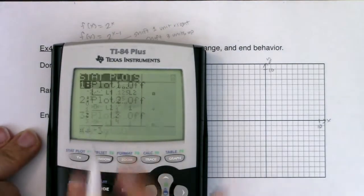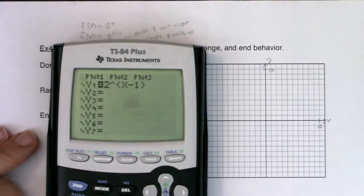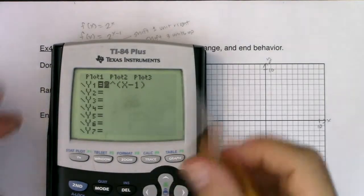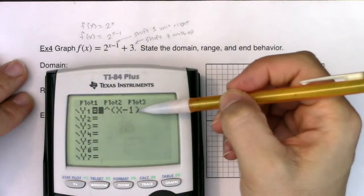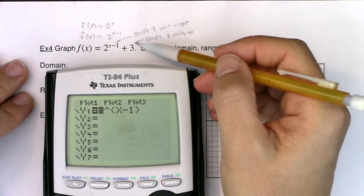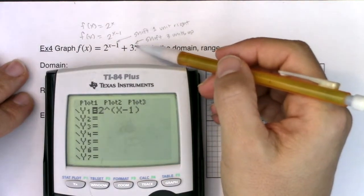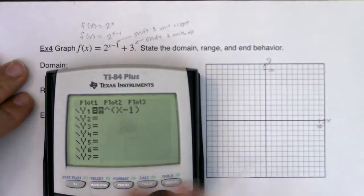I'm going to do it two ways, alright. So I want you to remember we had 2 to the x minus 1 in here. That was the last example we did. Now the change from example 3 to example 4 is that I'm adding this 3 here. So I need to shift all of my y values up by 3.